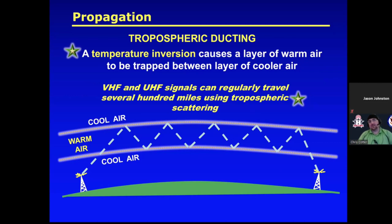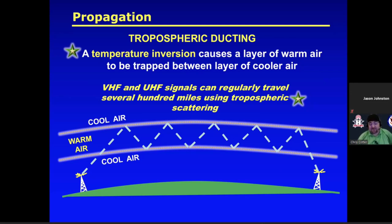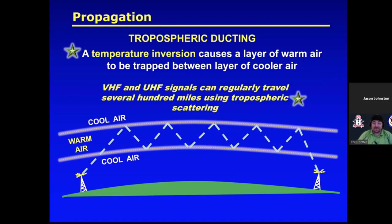When the atmosphere and temperatures are just right, we will hear that repeater 500 to 600 miles away as if sitting right next to it. You really can't predict it, but when it happens, you get amazing distant contacts on VHF and UHF. It's a really neat thing you'll experience.